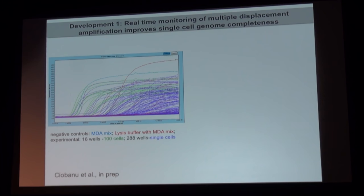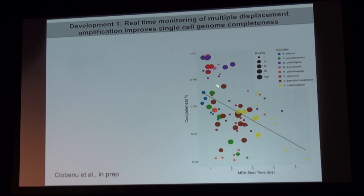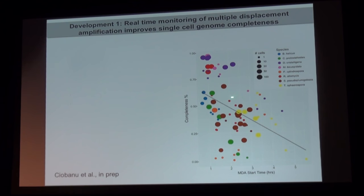By monitoring those reactions, we can use this metric of start time — when does the reaction start to take off — to tell us how good the amplification step will be. Here the x-axis is the start time of the reaction and the y-axis is genome completeness — how much of the target genome we were able to recover. You can see a strong negative correlation; each dot is a different library across the eight species with different sizes and numbers of cells. It's a strong correlation, though certainly not perfect.